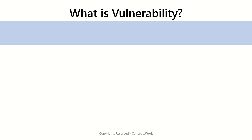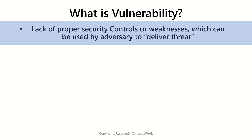A vulnerability is basically a lack of proper security controls or weaknesses that exist across different digital states of your enterprise, and these weaknesses can be used by an adversary to deliver threats. For those of you who have already seen the playlist on Zero Trust or XDR, when I say digital states I typically mean identity, endpoints, infrastructure, network, or applications. These are all digital states, and weaknesses or vulnerabilities can exist at any layer.